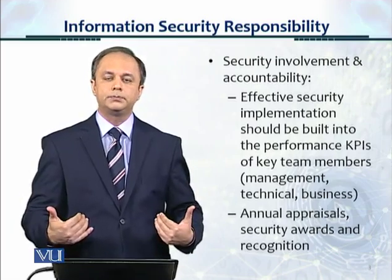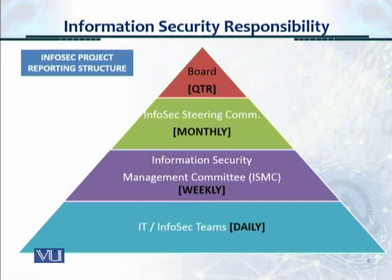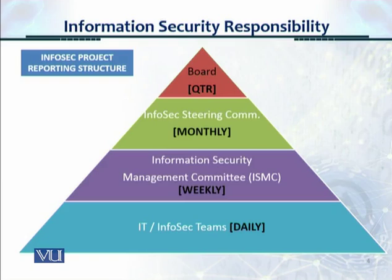It's not impacting their pocket at the end of the year. This chart shows how involvement and accountability can be built up in the organization in a typical project reporting structure. When we have a four-step security transformation project, we start with IT and InfoSec teams which work daily. Then there is the Information Security Management Committee, the ISMC, which plays a central critical role and should meet weekly. Then there is an Information Security Steering Committee, which would include heads of departments, a CIO, and other relevant stakeholders, meeting monthly. And then the board should review performance on a quarterly basis.